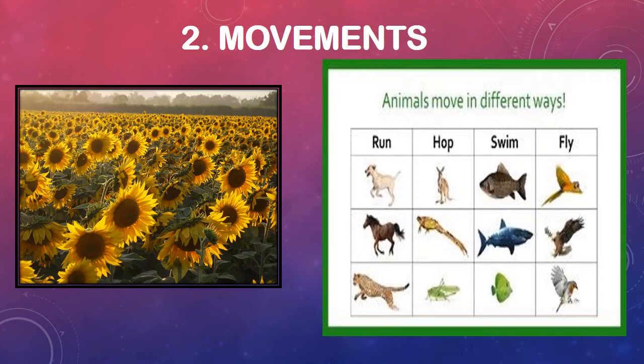If we talk about plants, we might not think plants move. But plants also move, just differently. Because they make their own food, they don't need to go from one place to another. Some plants show movement toward the sun's direction — some flowers face the sun. Some plants also show movement when touched, creating a response.